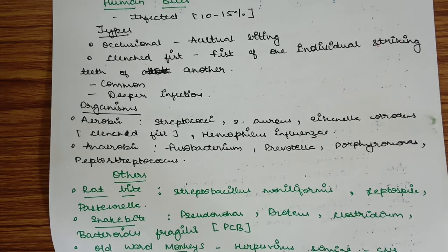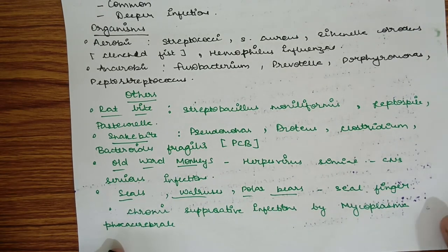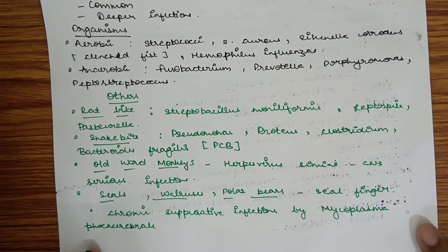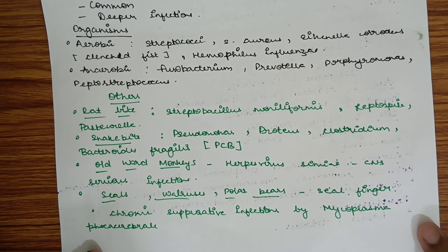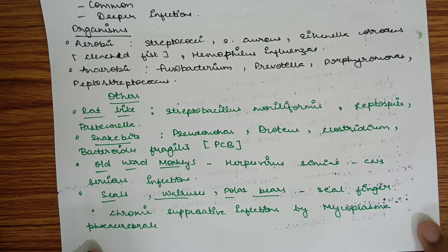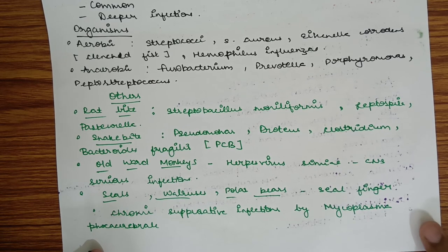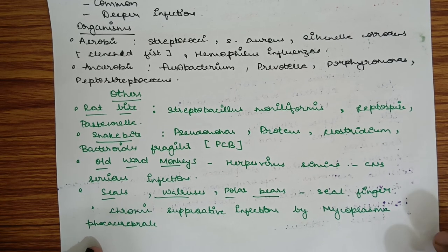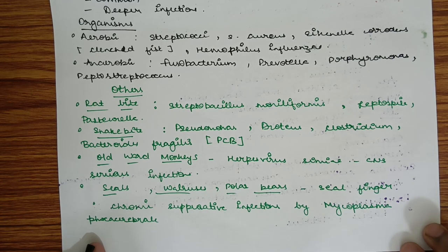Other bites include rat bites, snake bites, old world monkeys, and seals, walruses, and polar bears. Rat bites are caused by Streptobacillus moniliformis, Leptospira, and Pasteurella. Snake bites are caused by Pseudomonas, Proteus, Clostridium, Bacteroides fragilis (remember by PCB). Old world monkey bites are caused by Herpes virus simiae, which can reach the CNS and cause serious infections. Seals, walruses, and polar bear bites can lead to seal finger and cause chronic suppurative infections by Mycoplasma phocacerebrale.